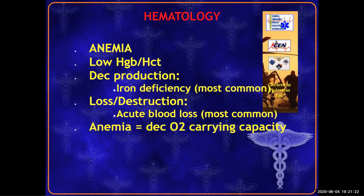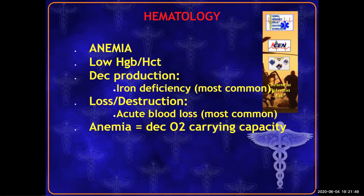The first blood condition is anemia — low hemoglobin means less oxygen-carrying capacity. In emergency medicine, we deal with acute anemia, where the number one cause is blood loss: a patient drops from a hemoglobin of 14 down to eight or nine suddenly. Chronic anemia, like iron deficiency, is not our emergency condition and won't be on the test. Acute anemia from blood loss is what matters here.